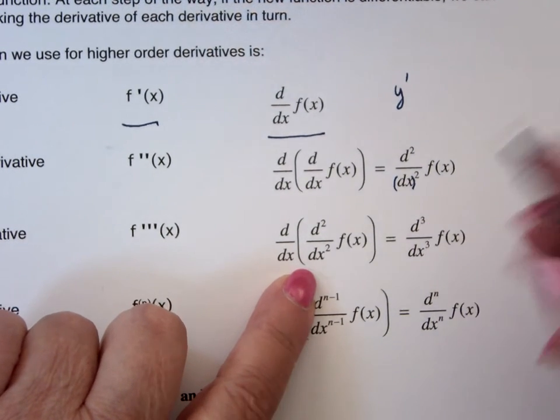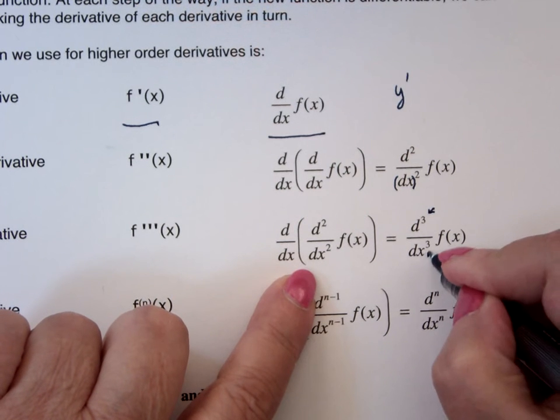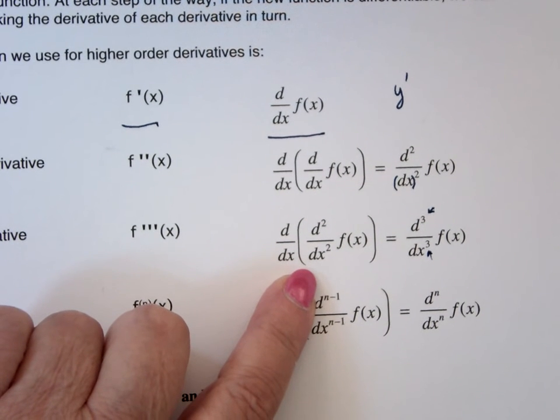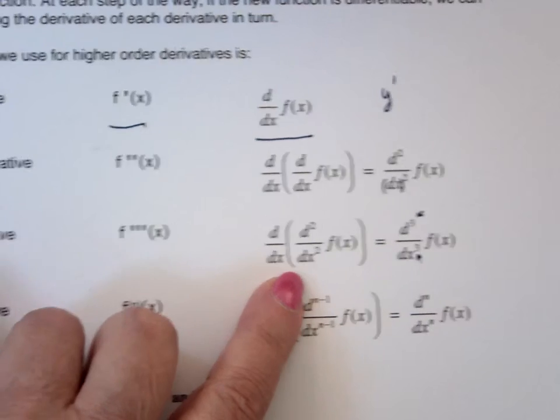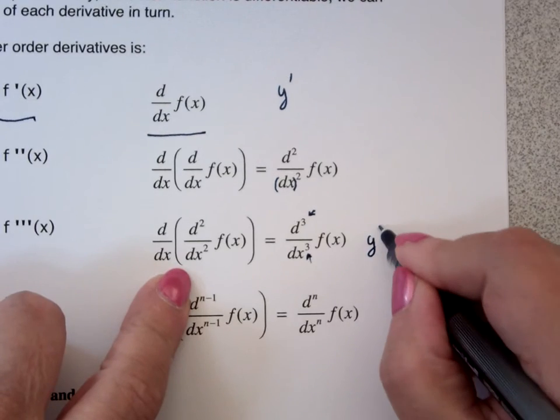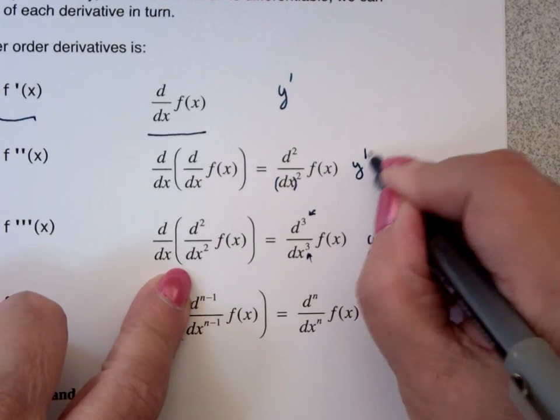So how would I know when I had the third derivative? You'll see threes there. And that usually, that's one of the notations. You could also do y triple prime, y double prime.